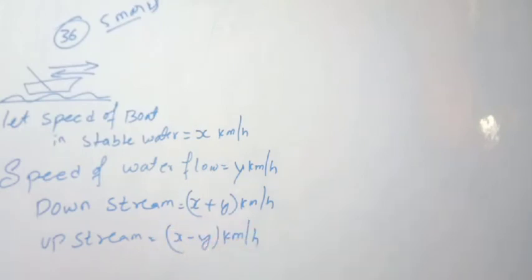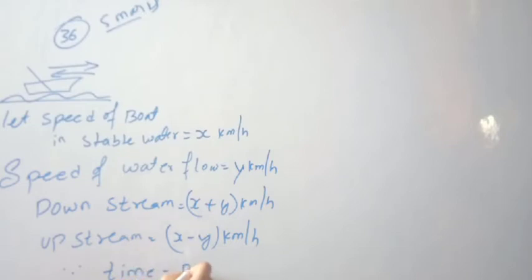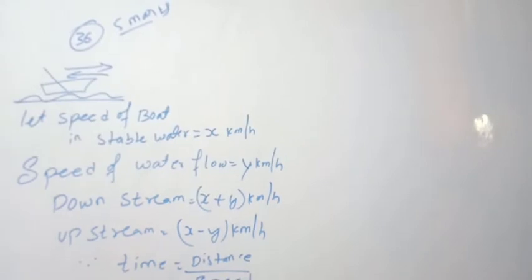Upstream is the opposite direction — the boat moves against the water flow, so the speed is reduced. Upstream speed is x minus y km per hour. The formula we use is: time equals distance divided by speed.